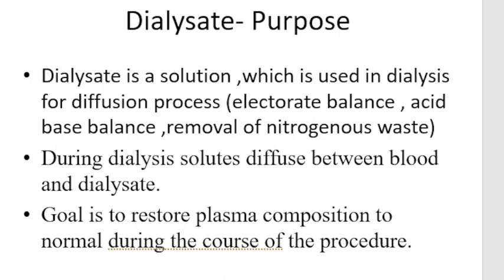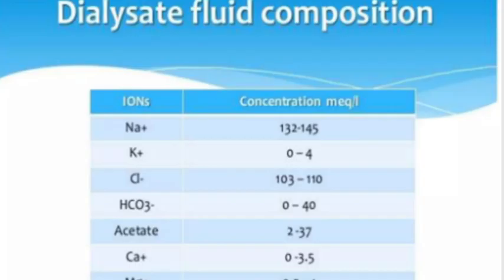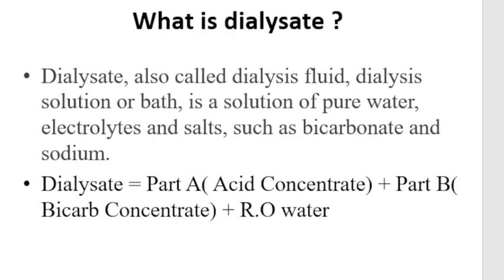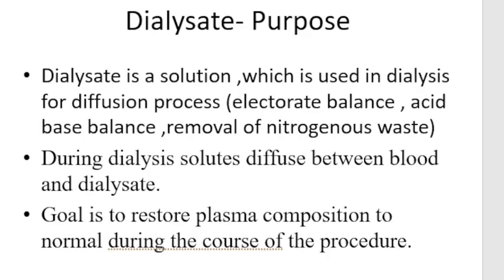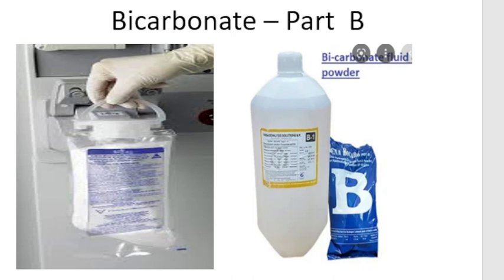There are three components of dialysate: Part A, which is Acid Concentrate; Part B, Bicarbonate Concentrate; and RO Water. In Part A, you can see two canisters in your dialysis machine. Part A contains all electrolytes — sodium, potassium, calcium, magnesium, and glucose. Part B contains sodium bicarbonate, which is used as a buffer in dialysis.